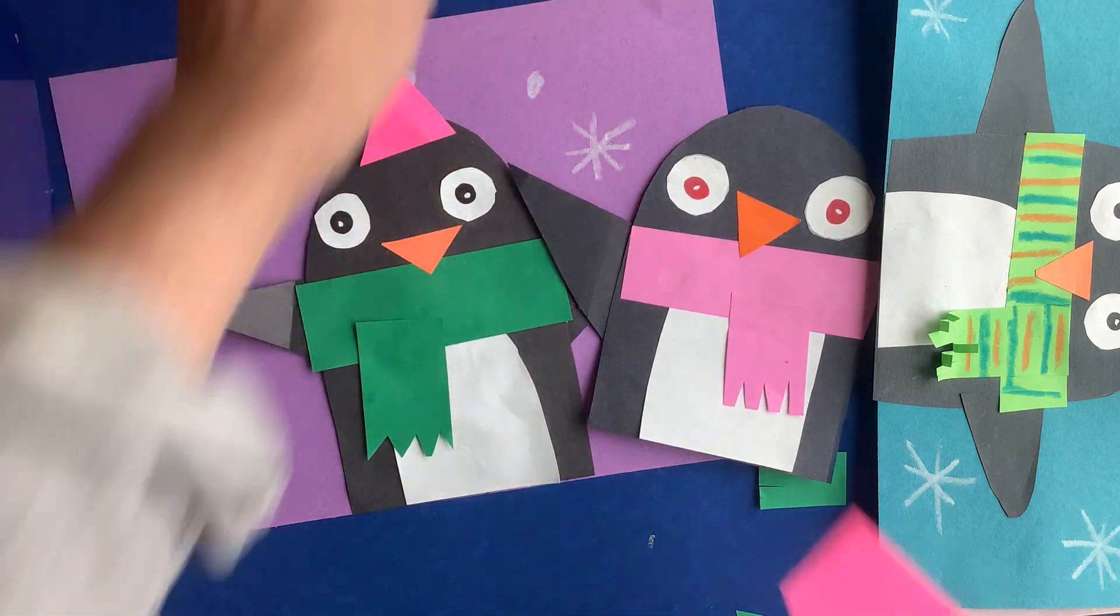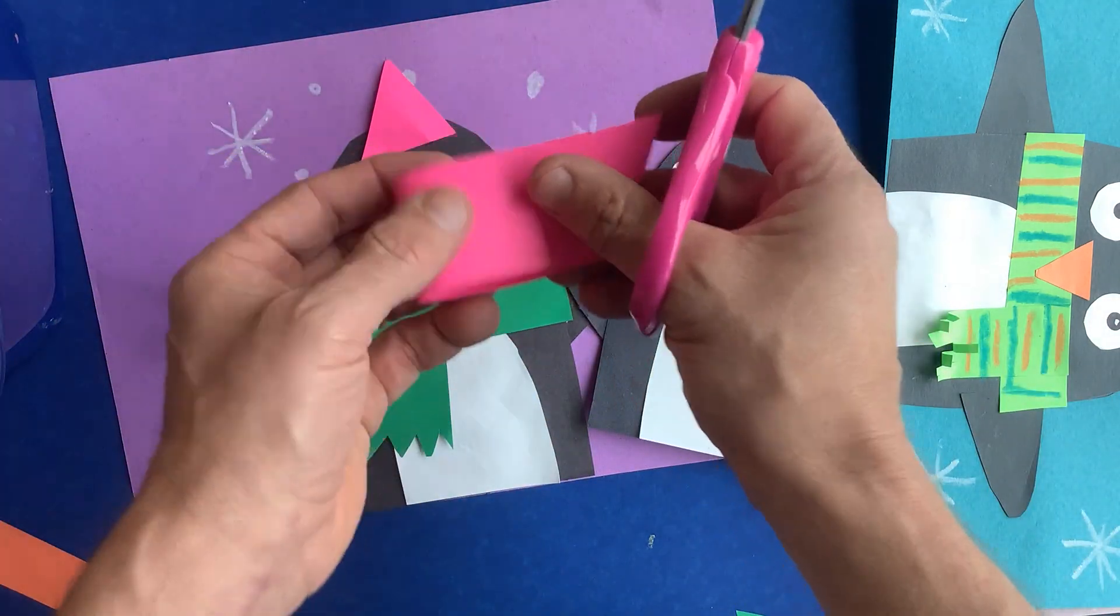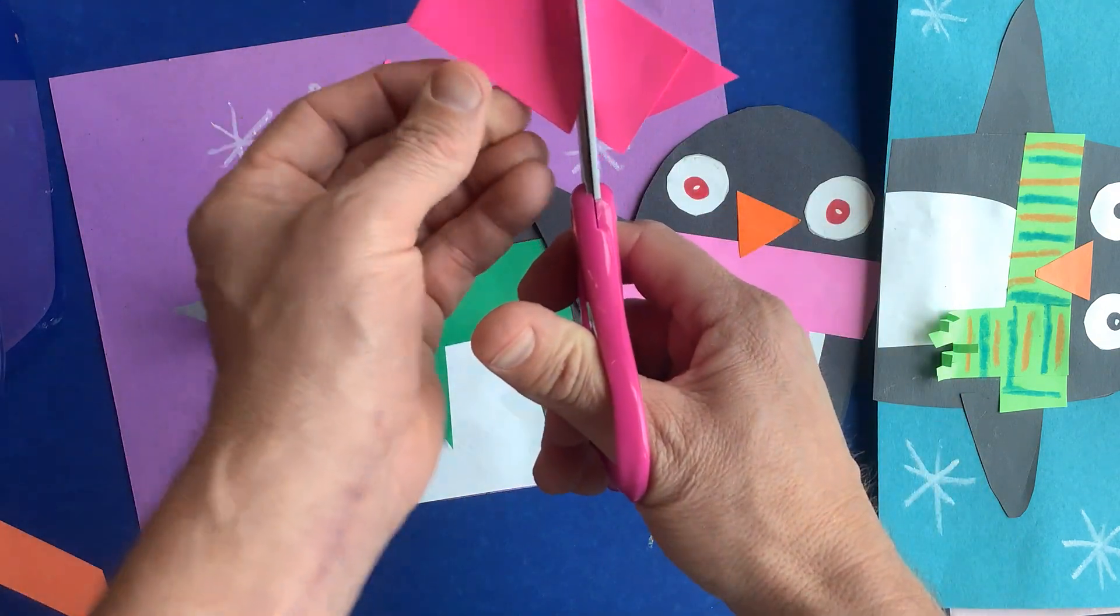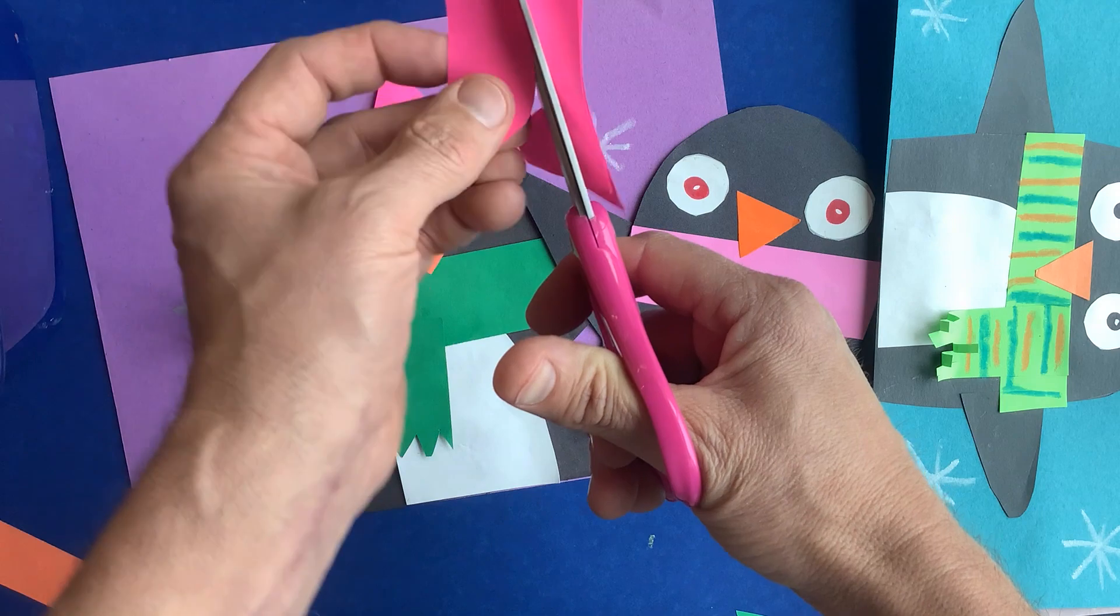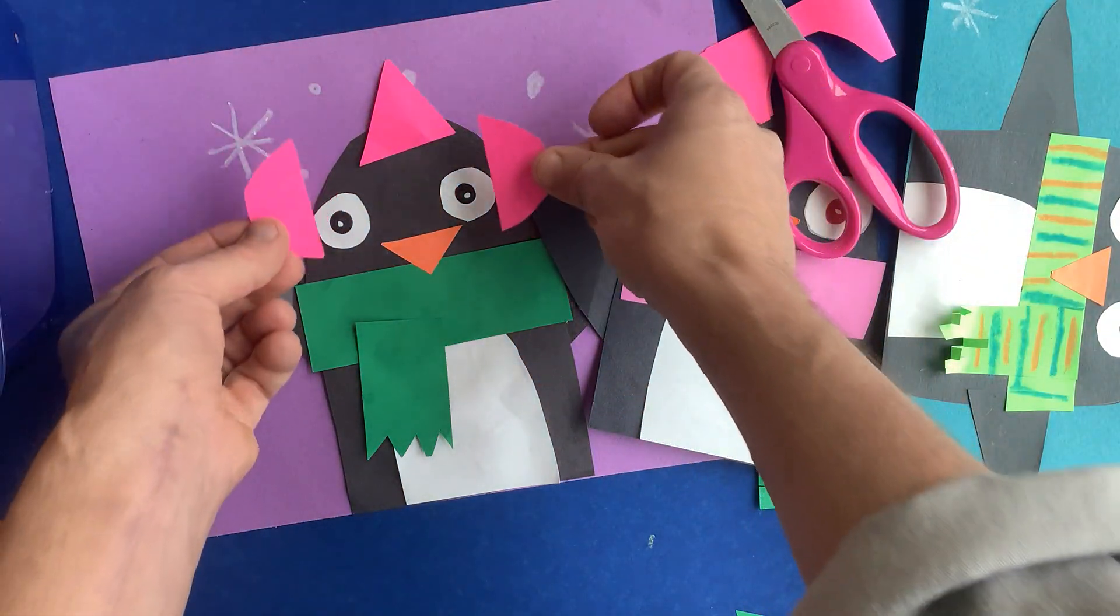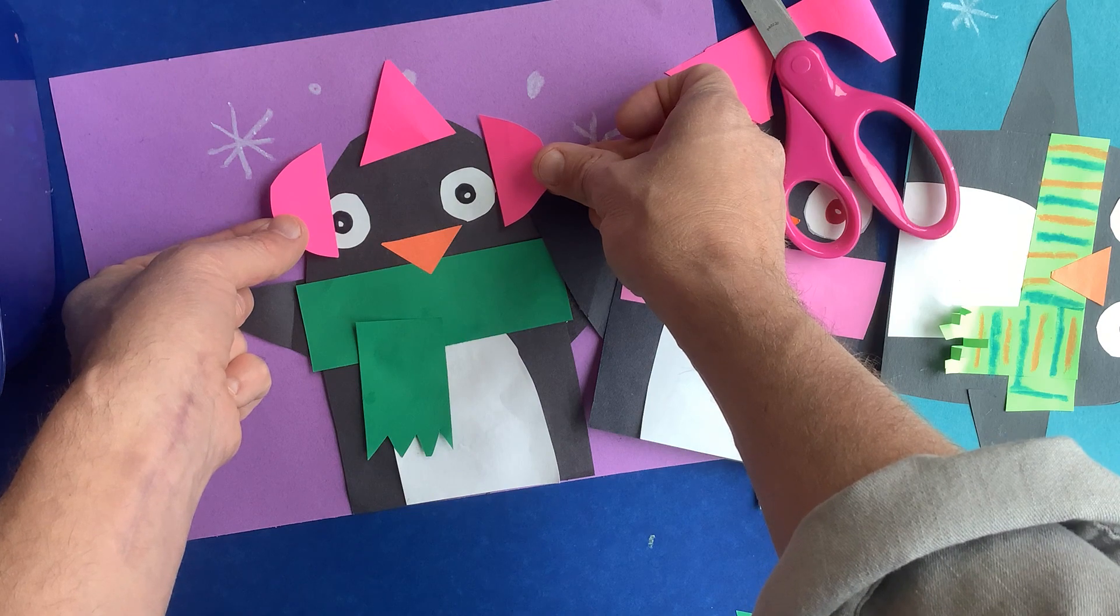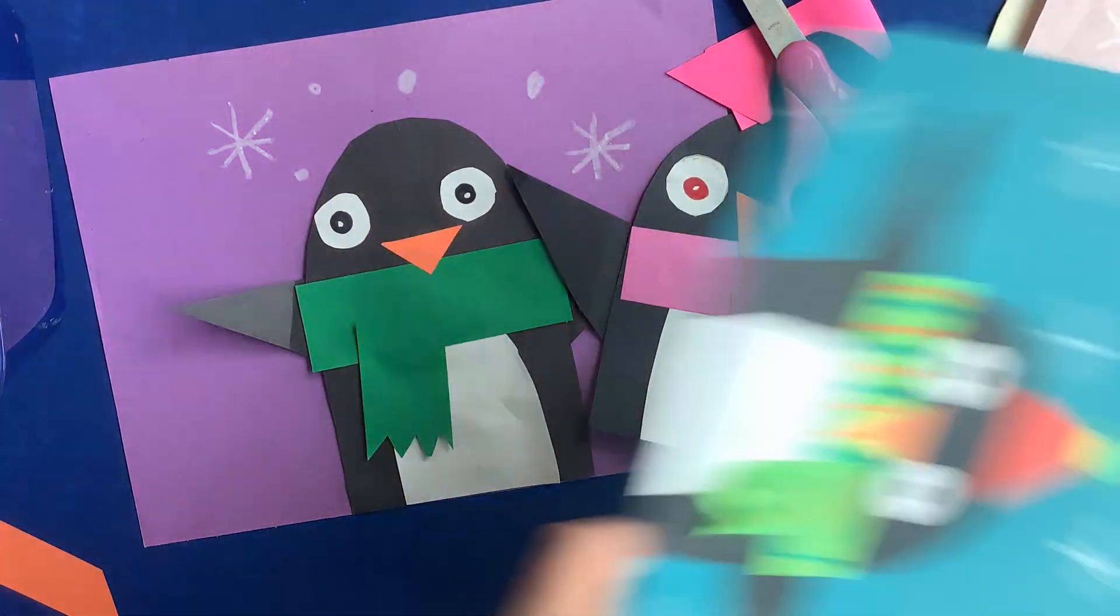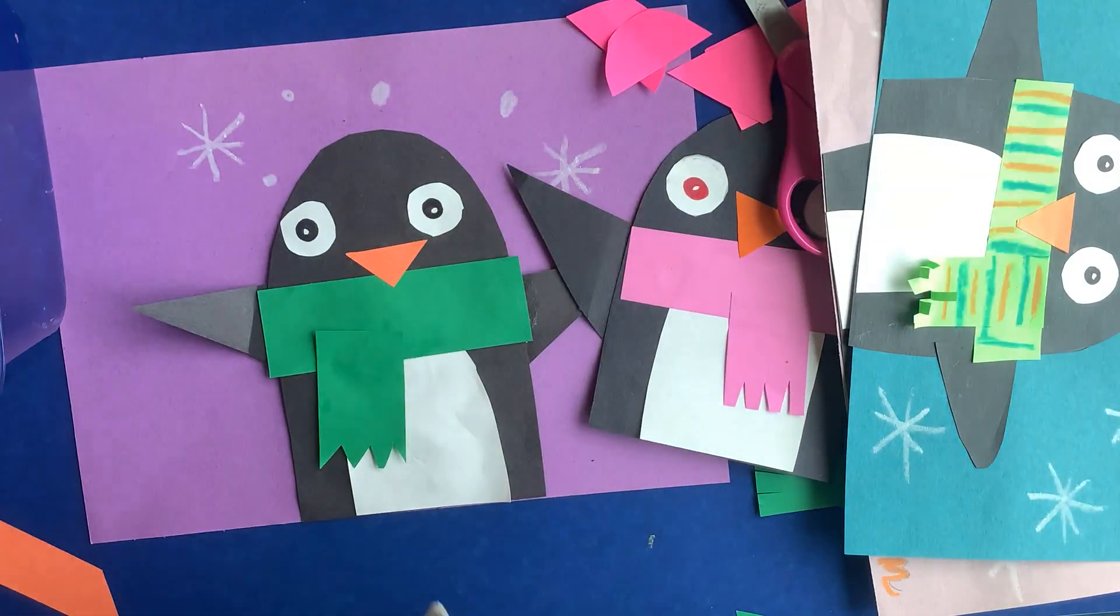If I want to do earmuffs, what I'll do is I'll fold and maybe I'll just cut a curve line like that. I got instant earmuffs. And then you can just draw a sharpie line across the top. Easy. Have fun.